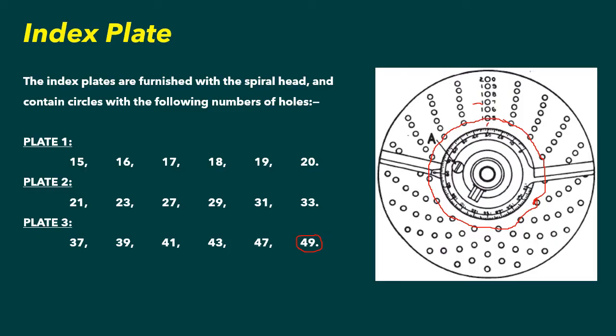Similarly, if you have plate number three and you go for 49, the bigger circle will have 49 holes. The benefit of using this index plate is that you don't need to divide one circle into different parts yourself — these are standard available plates. You can use this plate and it will help you to do your indexing, as you will see in the examples.